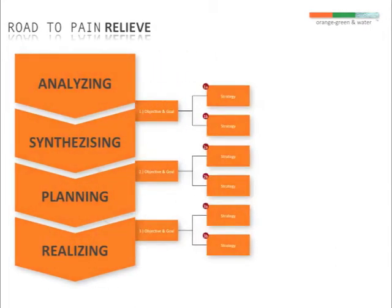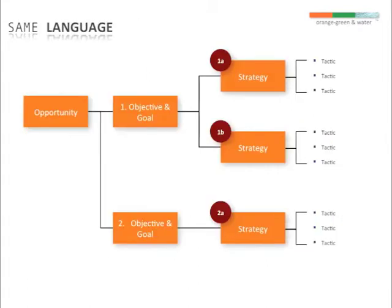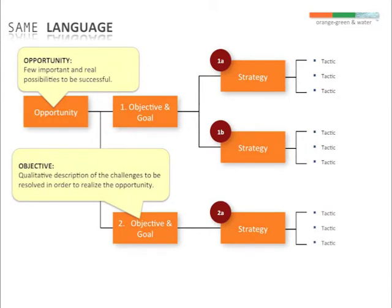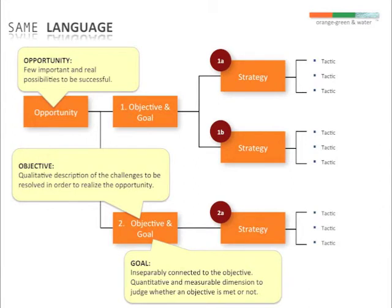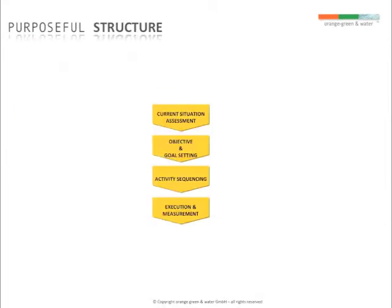Synthesizing is the indispensable step necessary to get the larger picture. The opportunity tree is the key output of this activity. It focuses on the few vital opportunities and describes the objectives in a qualitative compelling way.